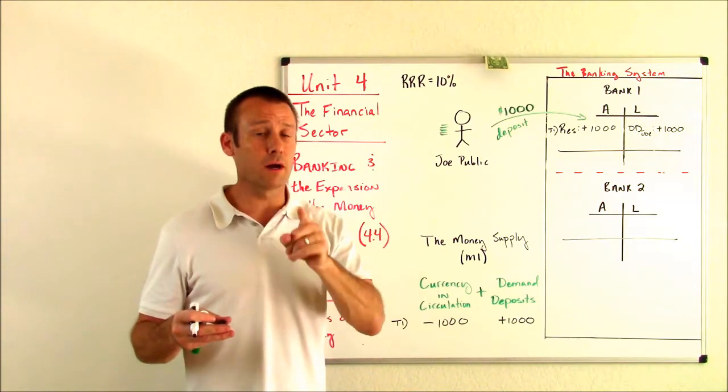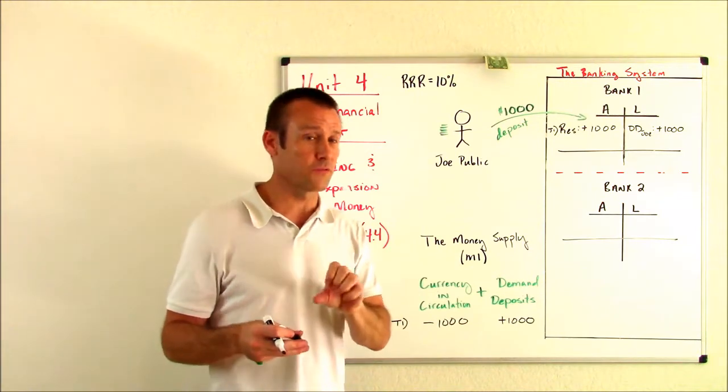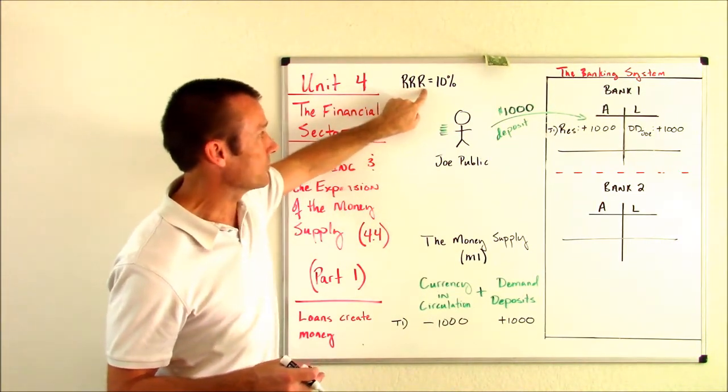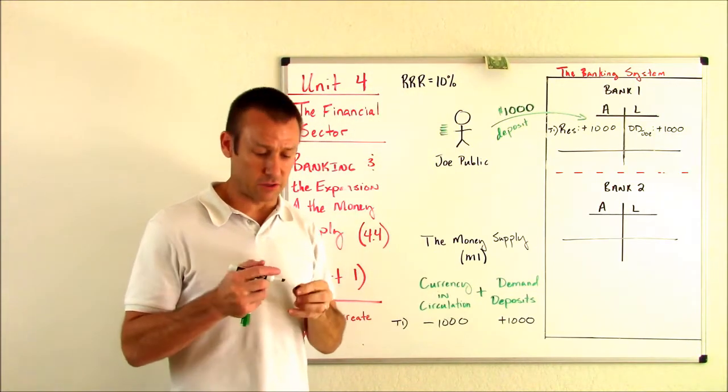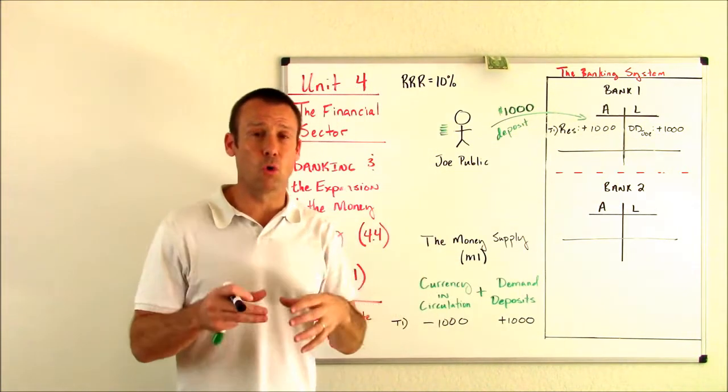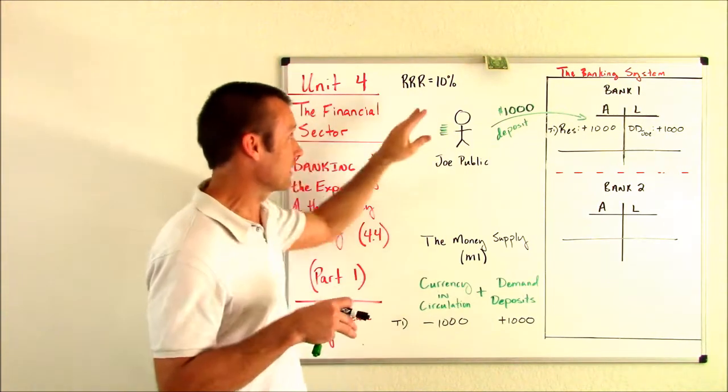However, what can bank one do with this deposit? They can make a loan. Now, before we go any further, I got to introduce the required reserve ratio. I'm going to say it's 10%. What is the required reserve ratio? It is the percent of the bank's demand deposits it must hold as reserves. It cannot lend out, that means.